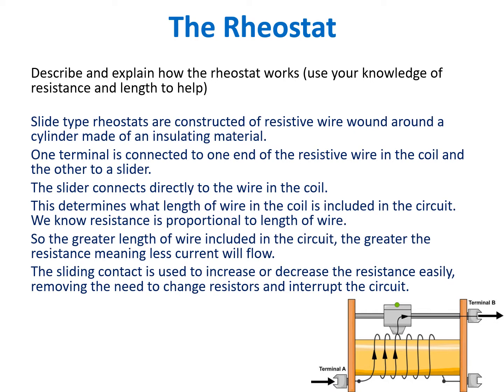We looked at the rheostat and you had a question to describe and explain how the rheostat works using your knowledge of resistance and length. In the bottom of this picture you can see a diagram of a rheostat, a variable resistor. This is a slide-type rheostat, constructed of resistive wire — a wire made of a metal — wound round a cylinder made of an insulating material.